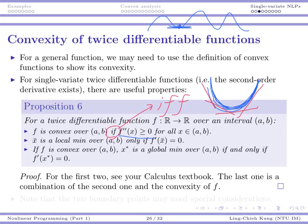Third condition: this is stronger than the second. For a general function, a local minimum only requires the first-order derivative to be zero. But if the function is convex, then a local minimum is also a global minimum, and the condition becomes if-and-only-if: a point is a global minimum if and only if its first-order derivative is zero. This follows directly from the proposition, and you should be able to understand it intuitively.